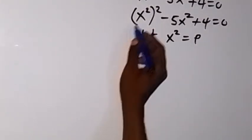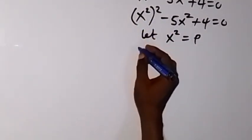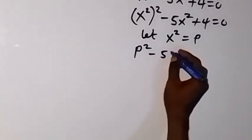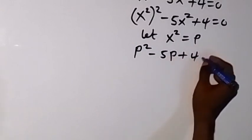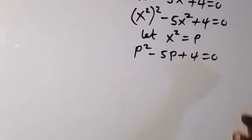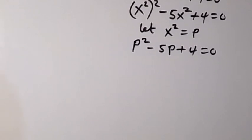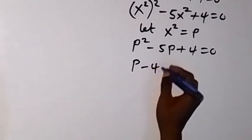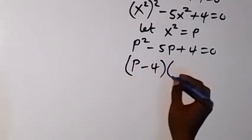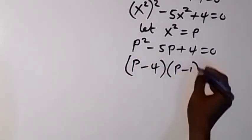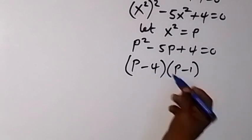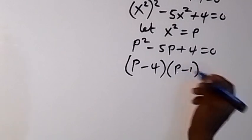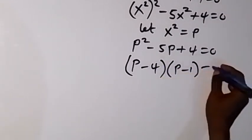Then we can replace it here now and write this as p² - 5p + 4 = 0. And by the time we solve this we have (p - 4)(p - 1). Because -4 - 1 gives us -5 and -1 times -4 gives us +4, equals 0.